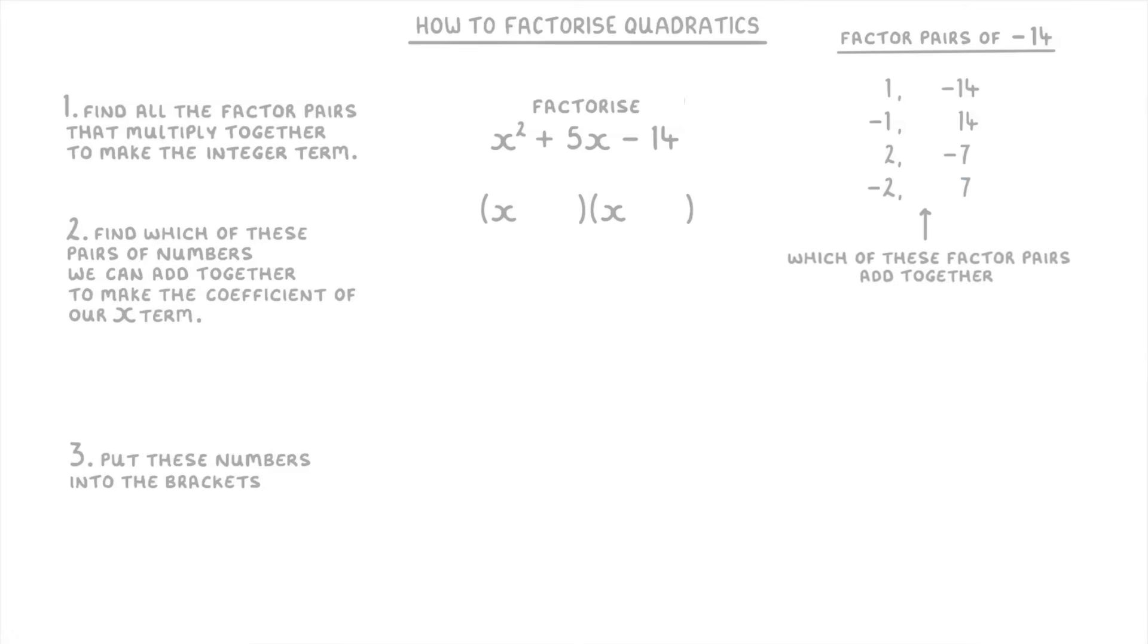The next step is to find which of these factor pairs adds together to make our x coefficient, which in this case is positive 5. 1 plus negative 14 makes negative 13, so it's not going to be that one. Negative 1 add 14 makes 13, so not that one either. 2 plus negative 7 makes negative 5, so close but still no. But negative 2 plus 7 does make positive 5, so that's the one that we need.